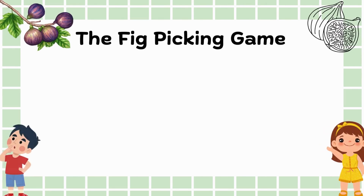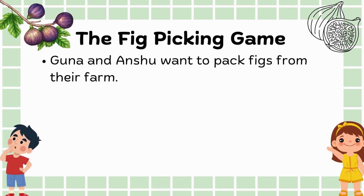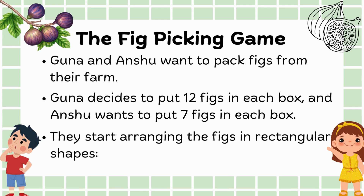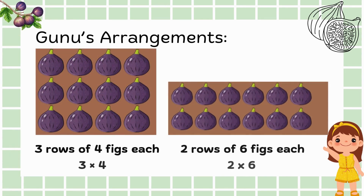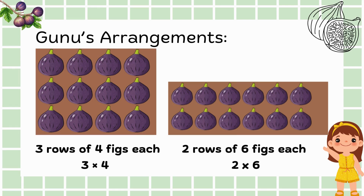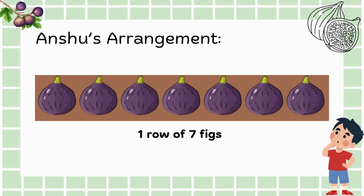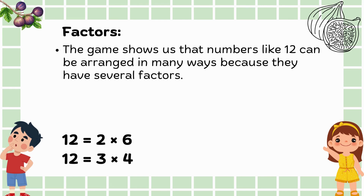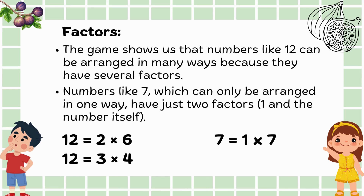It's time for the fig picking game. Guna and Anshu want to pack figs from their farm. Guna decides to put 12 figs in each box and Anshu wants to put 7 figs in each box. They start arranging the figs in rectangular shapes. Guna's arrangements include 3 rows of 4 figs each and 2 rows of 6 figs each, while Anshu can only arrange his 7 figs in one row of 7 figs. We see that numbers like 12 can be arranged in many ways because they have several factors, whereas numbers like 7 can only be arranged in one way, meaning they have just 2 factors: 1 and 7.